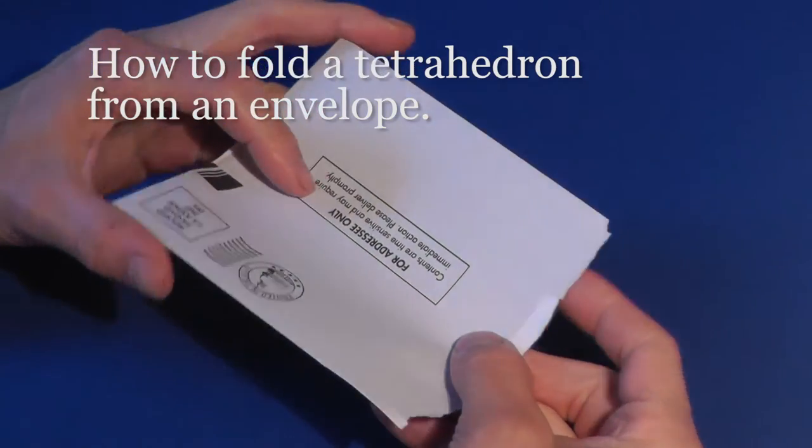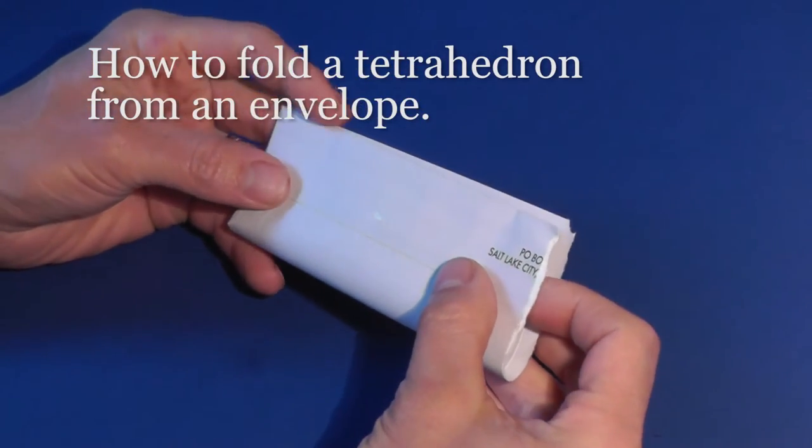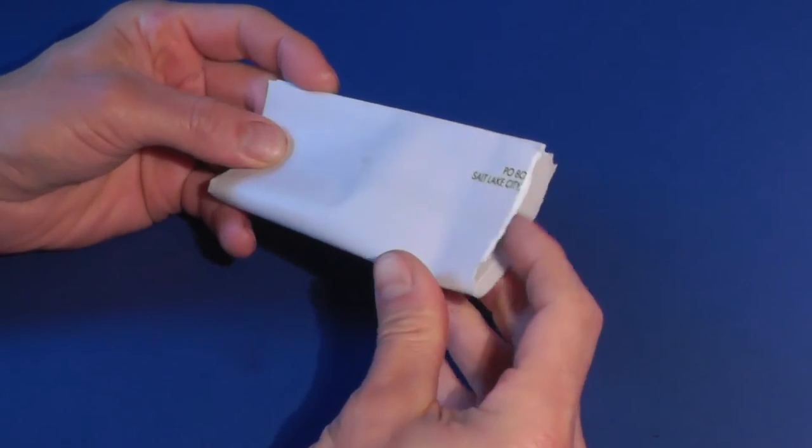You can make a tetrahedron out of an envelope. First we will need to measure where to cut the envelope.